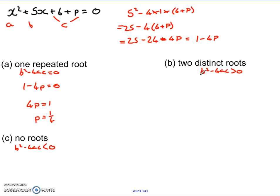For two distinct roots, I know the b squared minus 4ac has to be bigger than 0. So I know 1 take away 4p has to be bigger than 0. Manipulate it about, I know 4p has to be less than 1. So p has to be less than a quarter. If the value of p is less than a quarter, what we would then get is two distinct roots. So say I set p equal to 0, and I had x squared plus 5x plus 6 equals 0, I'd get two distinct roots.